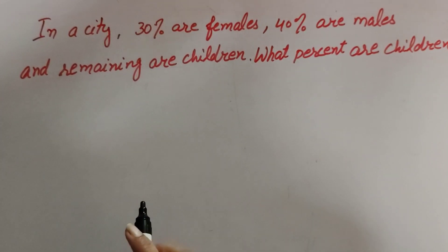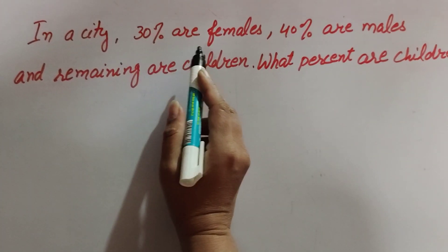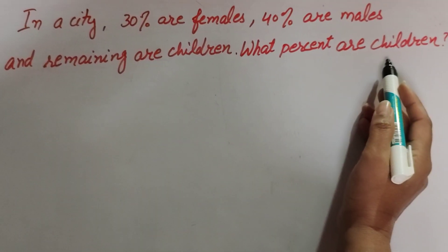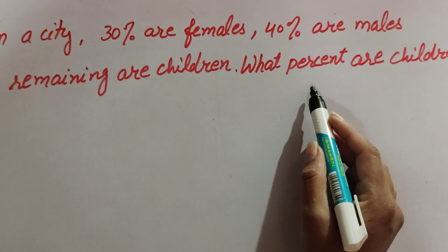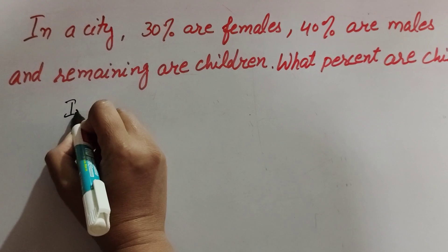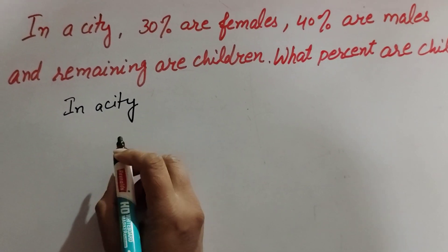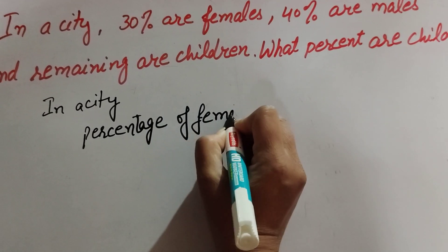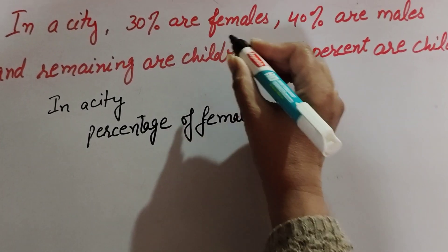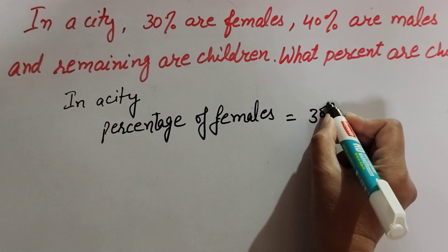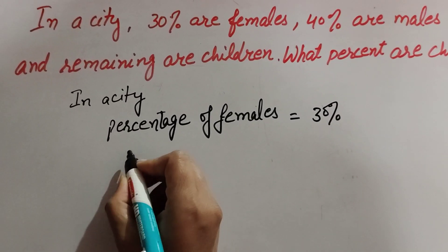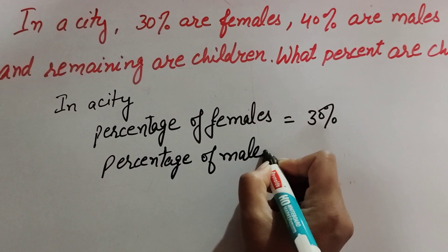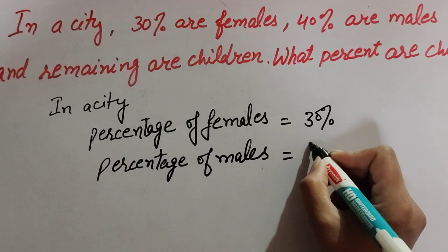Hello friends, welcome to my channel. In this video, we discuss: in a city, 30 percent are female, 40 percent are male, and remaining are children. What percent are children? The given information is: percentage of female is equal to 30 percent, and percentage of male is given as 40 percent.